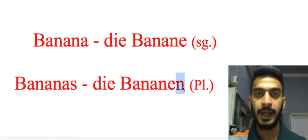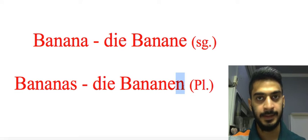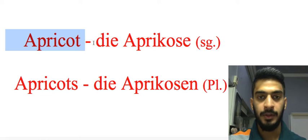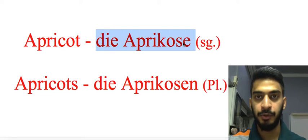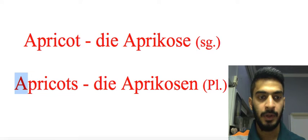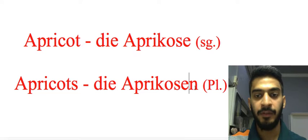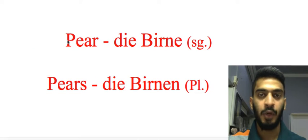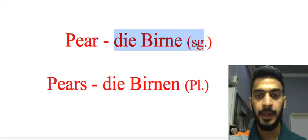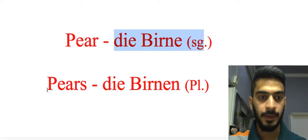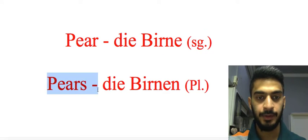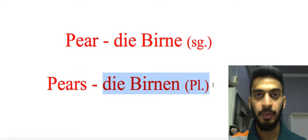We have an extra 'n' in the plural form for banana. Apricot — 'die Aprikose' singular form, apricots — 'die Aprikosen' plural form — again we have an extra 'n' in the plural form. Now we have the word pear — 'die Birne' singular form, pears — 'die Birnen' plural form — again we have the letter 'n' at the end.